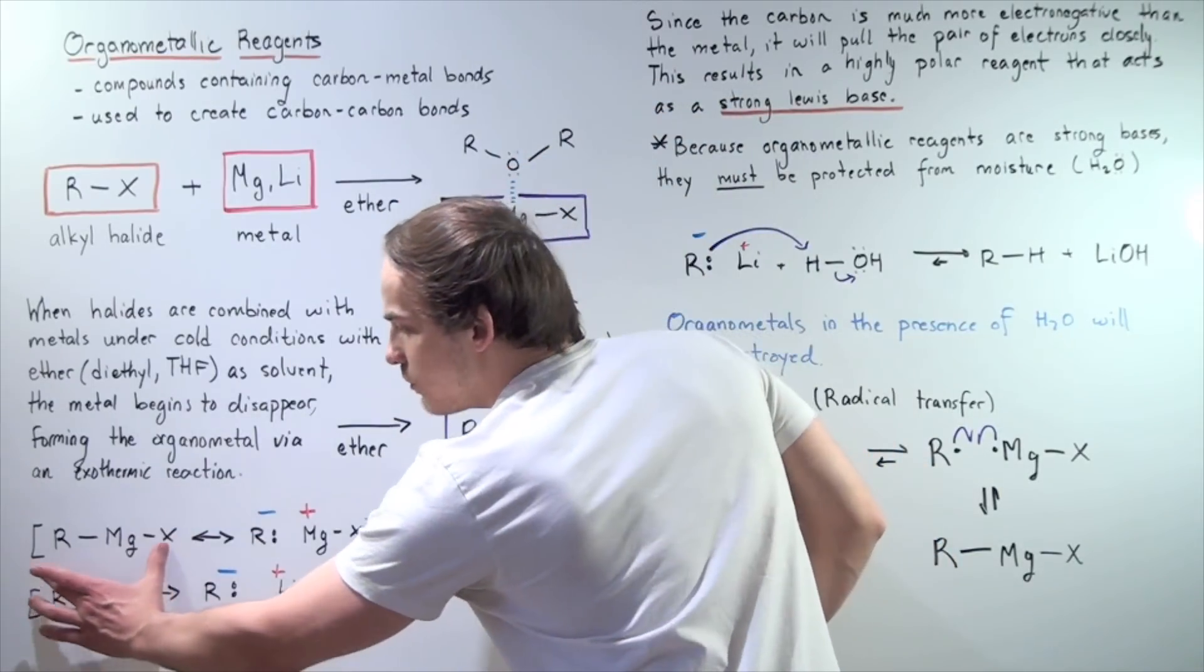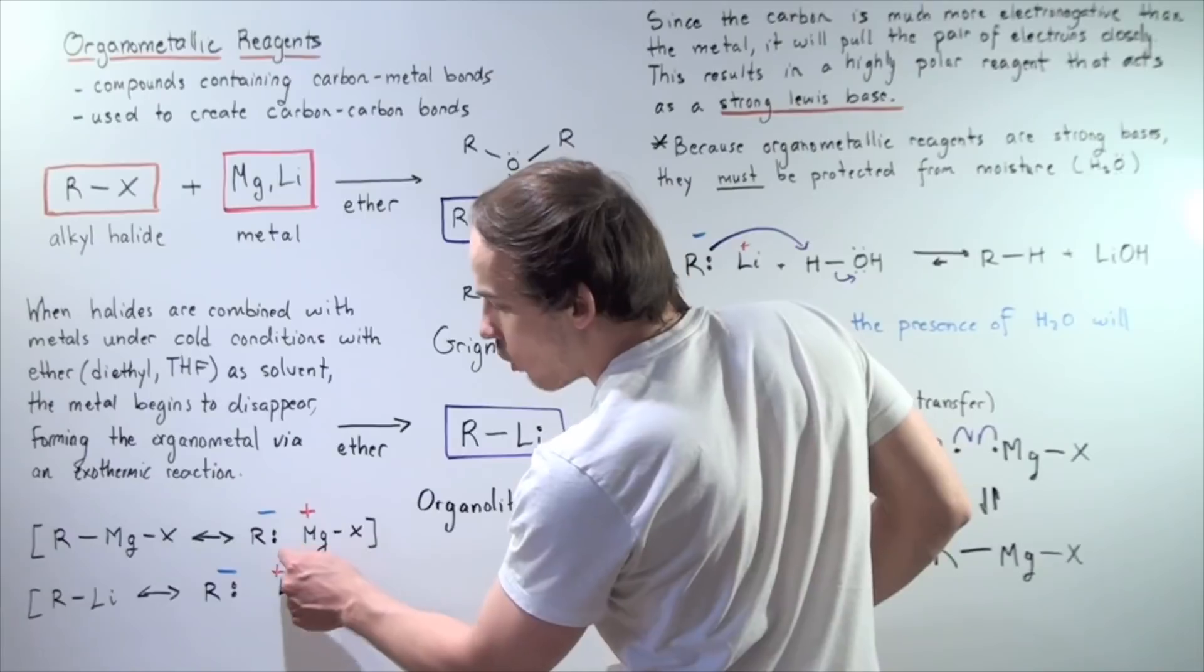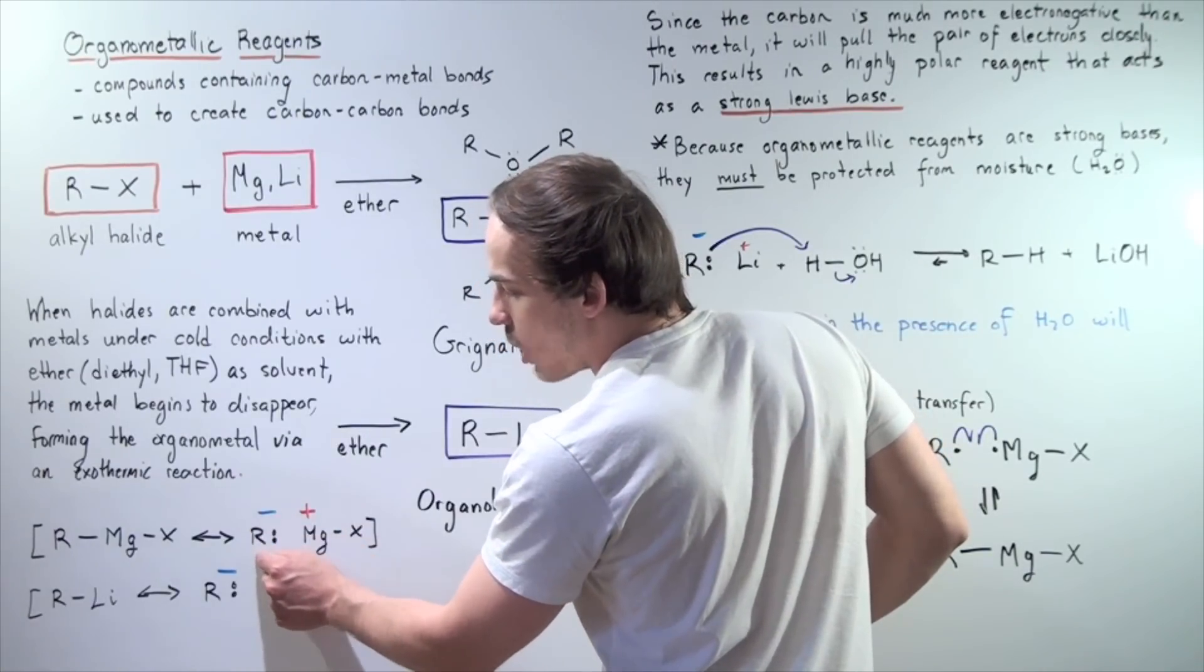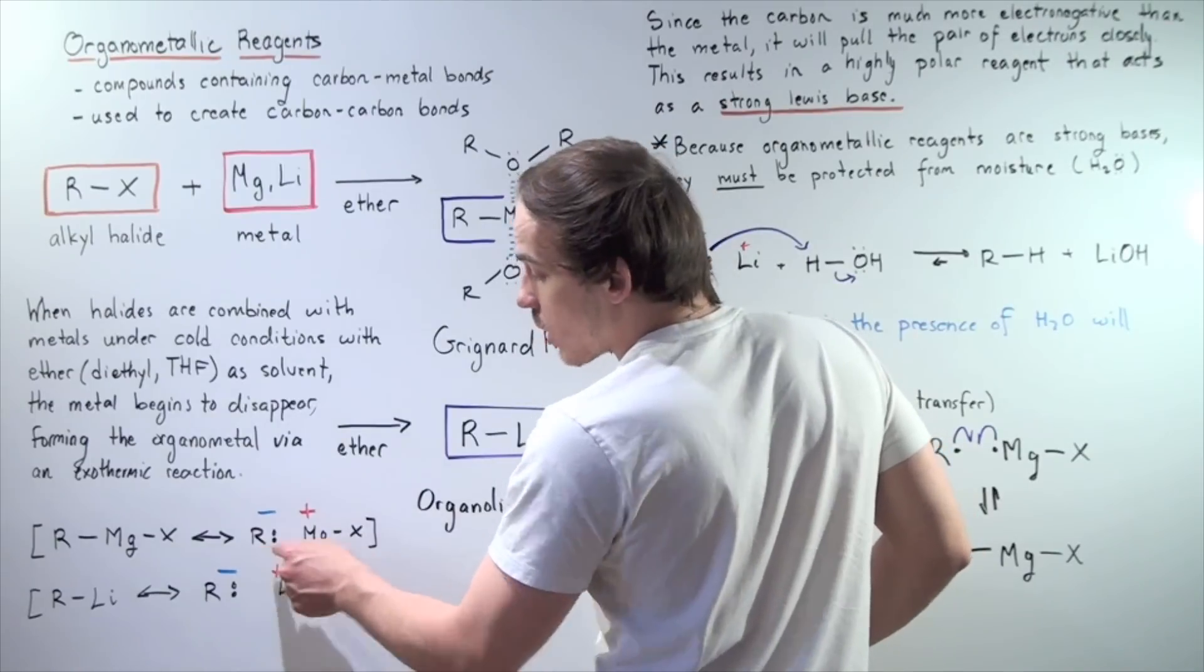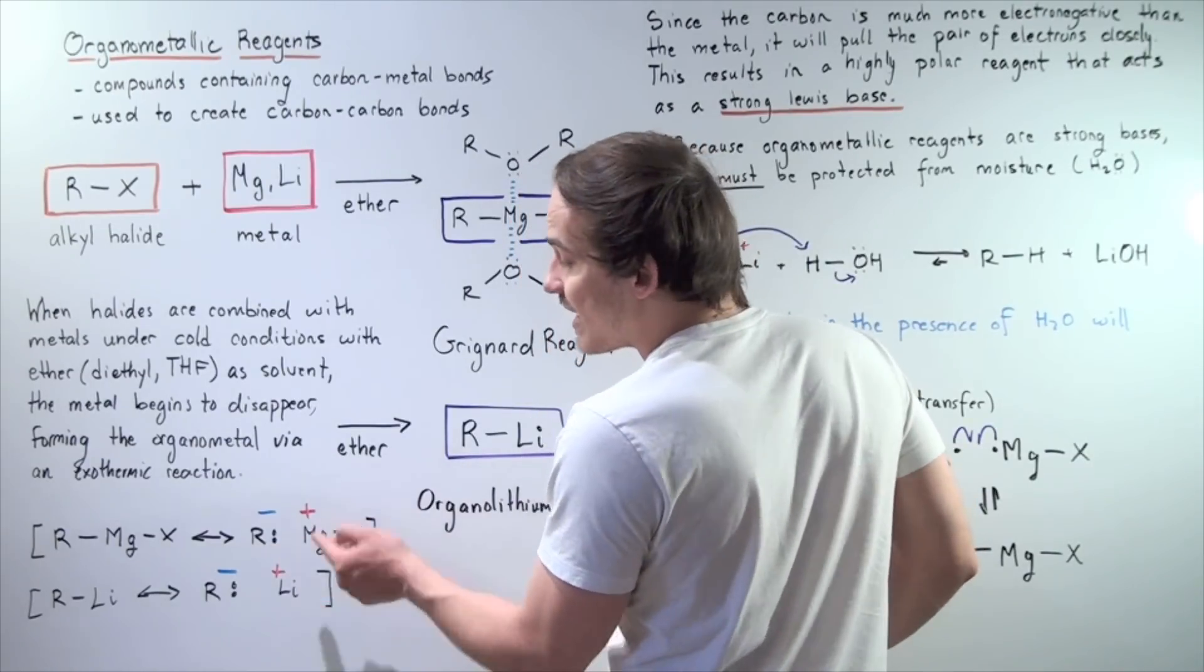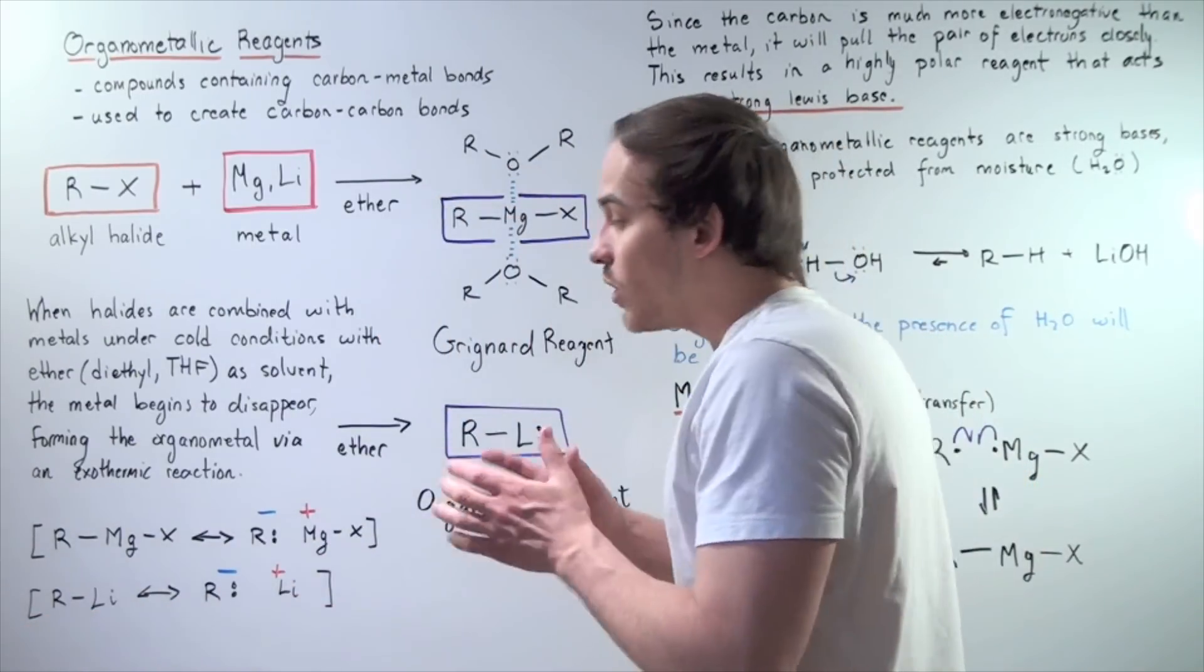We see that one of the resonance forms is this, and a second one is a form that has two electrons on the R. So this R has a negative charge, and this magnesium, the metal, has a positive charge. Likewise, the same for this case.